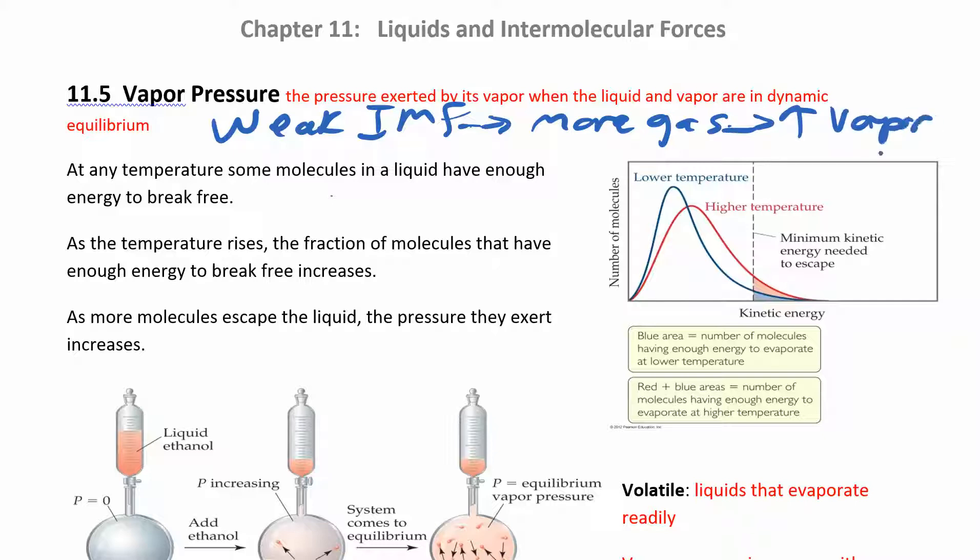So this is the only one. Everything else was like stronger intermolecular forces, higher viscosity, stronger intermolecular forces, higher boiling point. This is the only one where the weaker the intermolecular forces are, the stronger the vapor pressure. So high vapor pressure happens when you have really weak intermolecular forces. It's really easy for the molecules to go from the liquid to the gas phase.